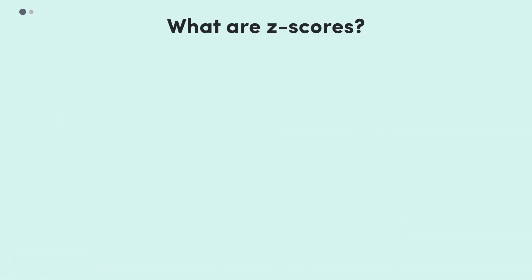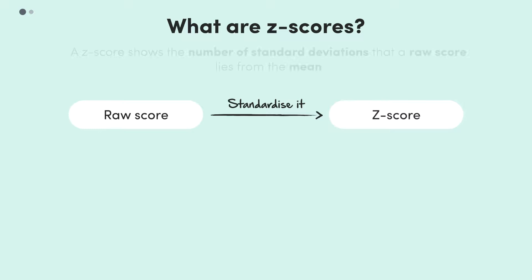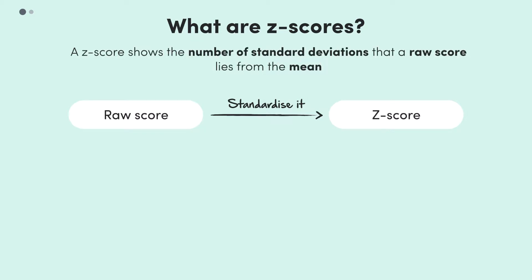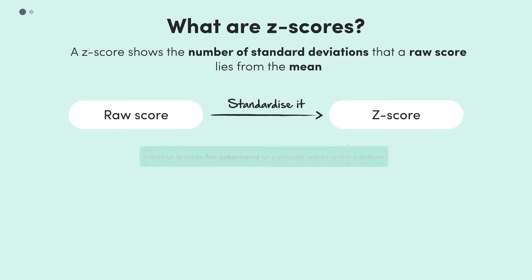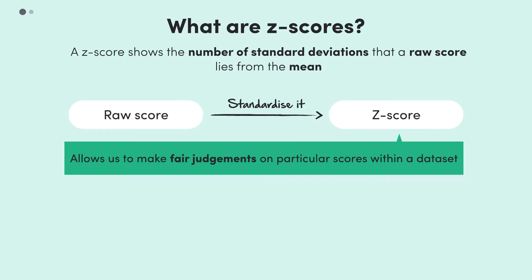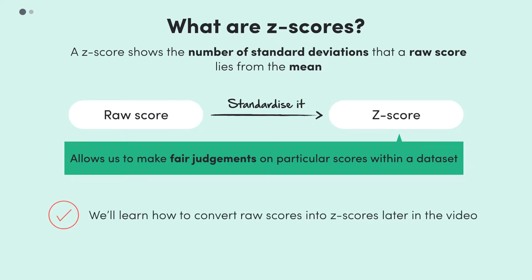This is where Z-scores come into play. Essentially, we can take raw scores and standardise them into Z-scores. A standardised score, or Z-score, will show the number of standard deviations that a score lies from the mean of the dataset. For example, if Emily's raw score of 52 transformed into a Z-score of 2, then Emily's exam mark would be two standard deviations above the mean, so we could say that Emily did comparatively well in her exam. Z-scores give us a way of representing raw scores in terms of how many standard deviations they are away from the mean.